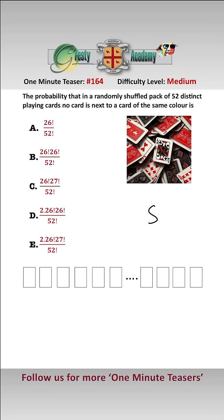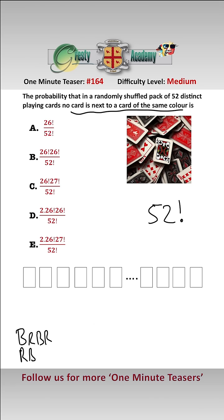With no restrictions whatsoever, there are 52 factorial ways of arranging a deck of 52 distinct playing cards. For every card not to be next to a card of the same colour, we are either going to have the alternating sequence black-red-black-red etc., or red-black-red-black etc.